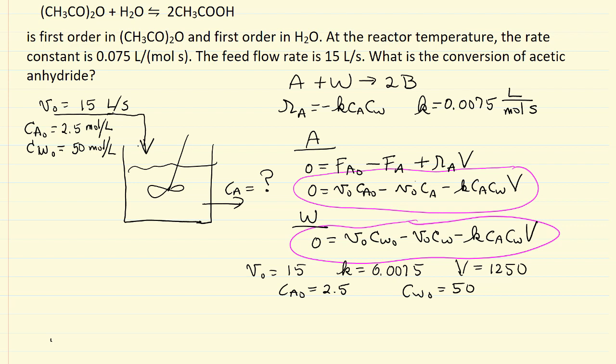What I'm going to show you now is a Polymath solution that gives us the final answer. The final concentration of A leaving is 0.081 moles per liter. The concentration of water doesn't change so much because we have so much more water, but we react most of the CA.